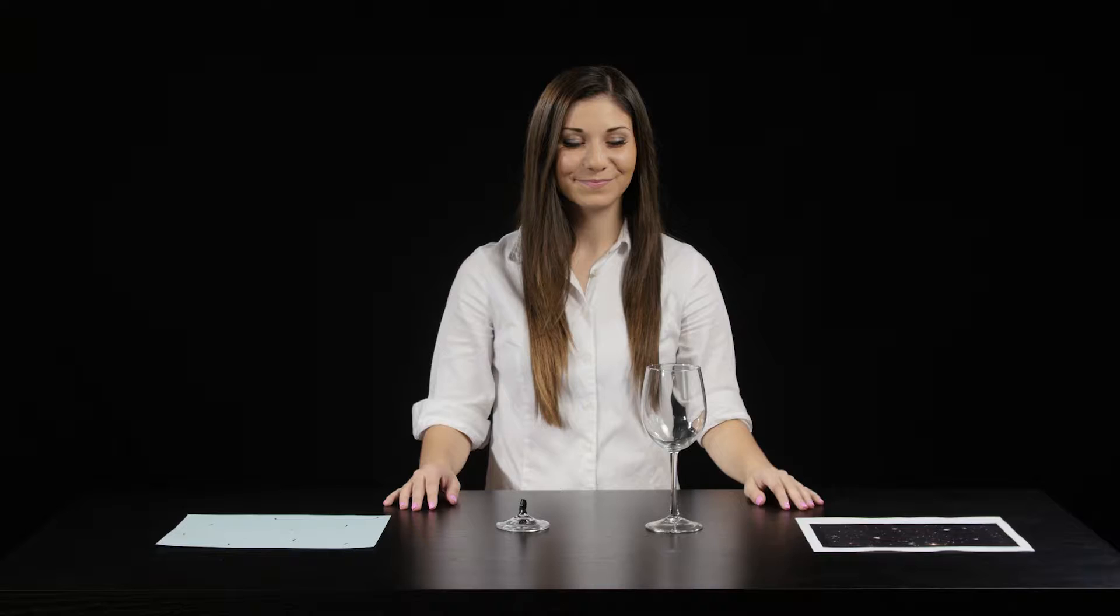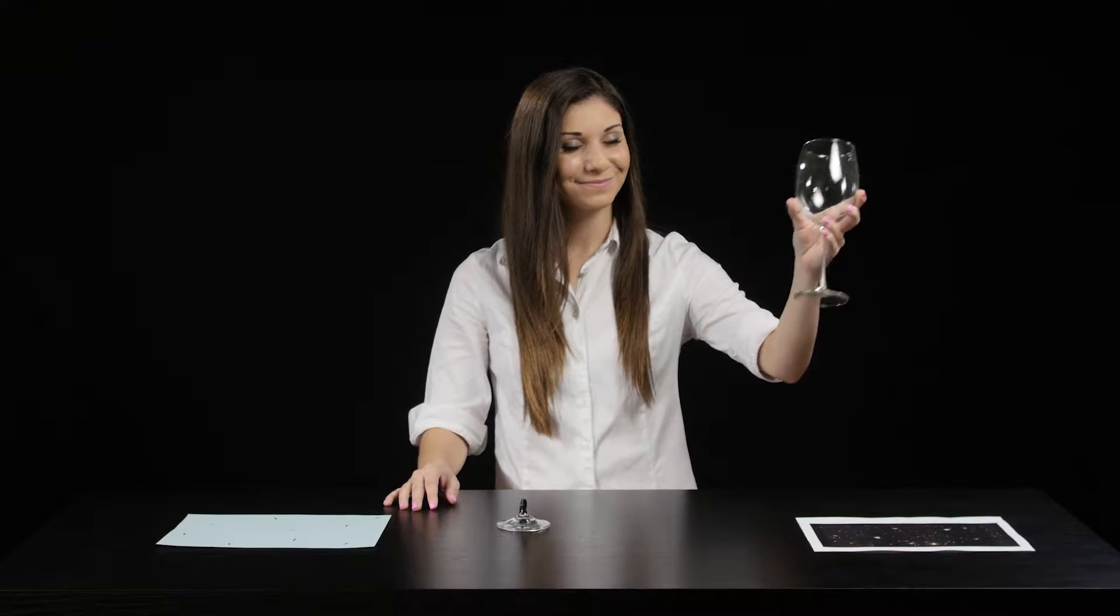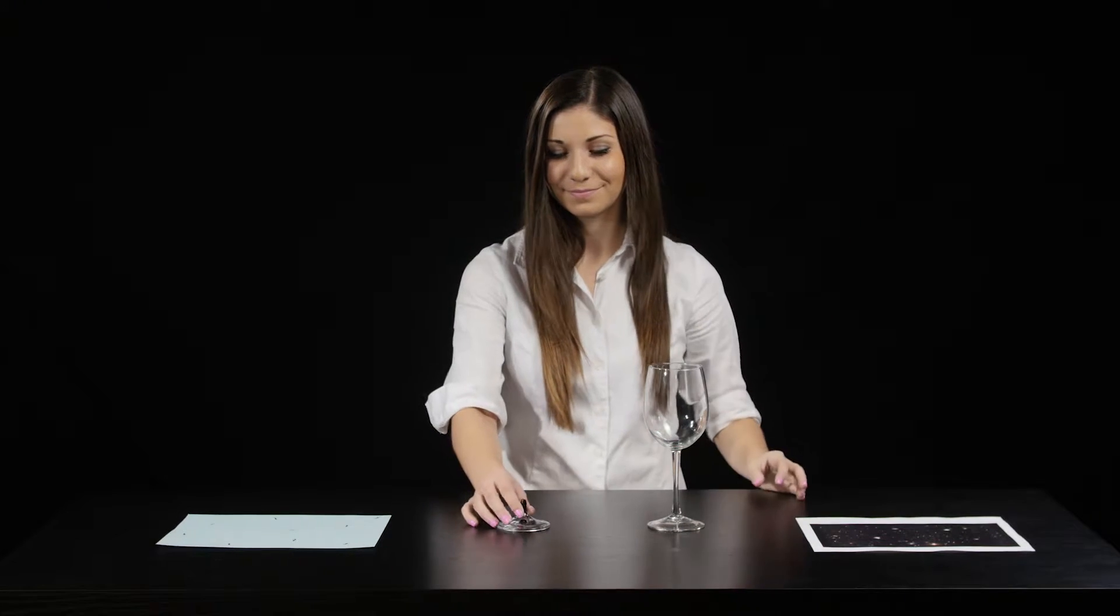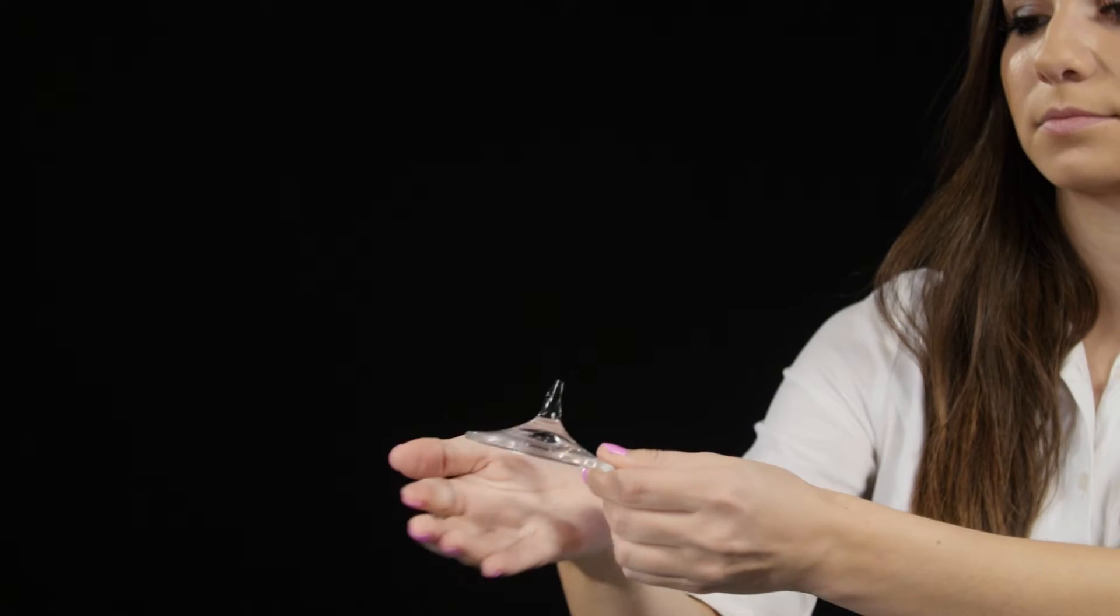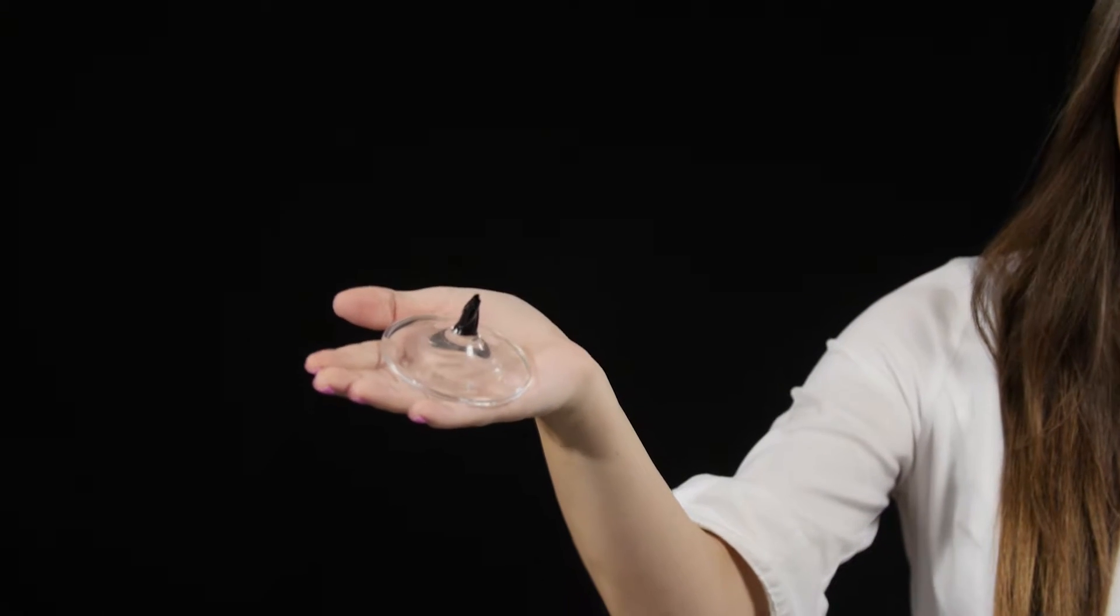To replicate this effect with glass lensing, we can use the bottom of a broken wine glass. Electrical tape keeps students safe and blocks the irrelevant stem.